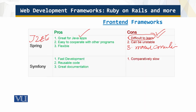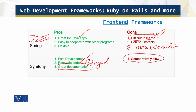Now let's look at Symfony. It supports fast development, reusable code, and has great documentation — which was not the case for some prior frameworks discussed. Its strengths include stability, high speed, flexibility, and possibilities for code reuse and optimization. It features a convenient event dispatcher together with dependency injection. The main con is that it is comparatively slow, so it is not the best choice for applications requiring high speed.